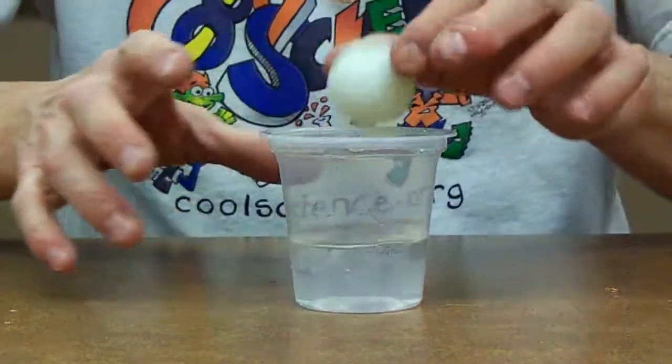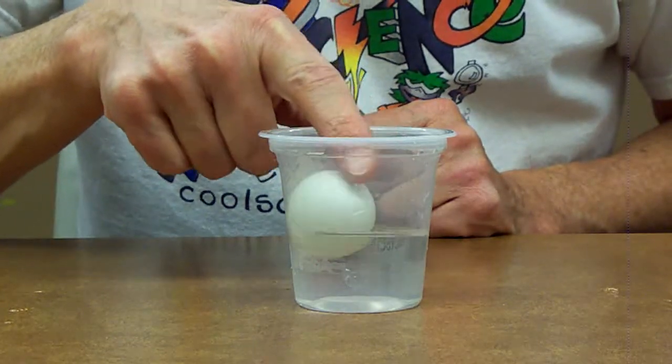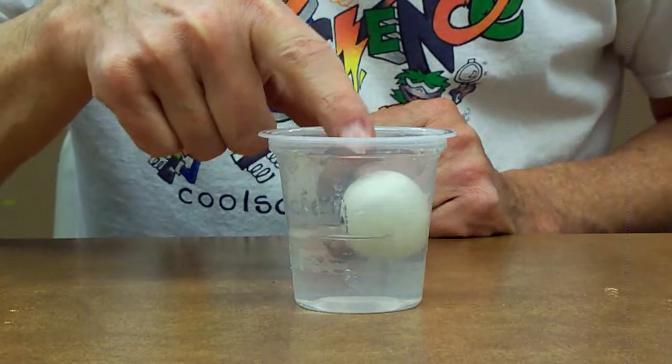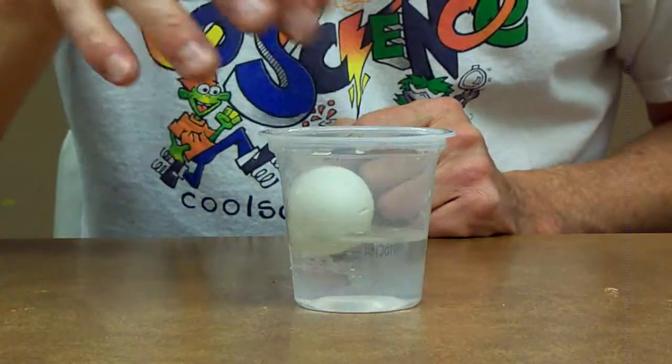It's going to stop it. Notice I put the ping pong ball in there, it always wants to float to the side. We may talk about that in another experiment. It's a property of basically the shape of the surface of the water.